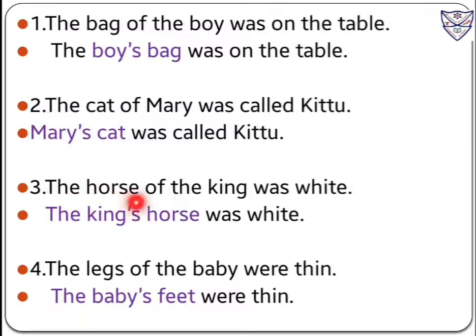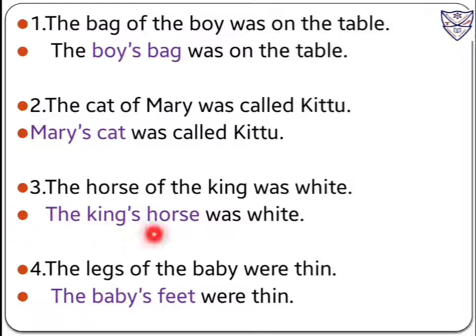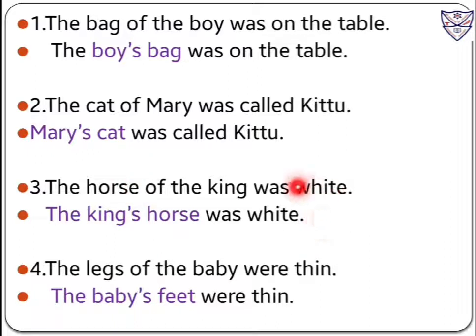Number three: the horse of the king was white. When we frame this sentence in possessive case form, the answer will be: the king's horse was white. When we say the king's horse was white, it means the horse belongs to whom? To the king. It shows possession that the horse belongs to the king.